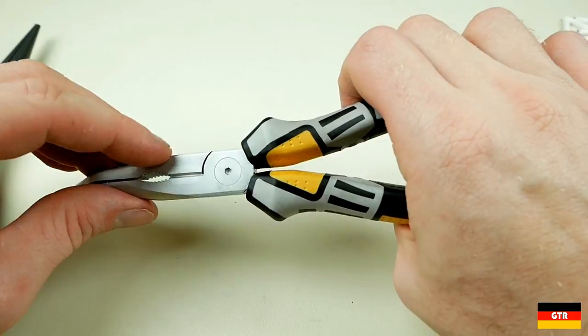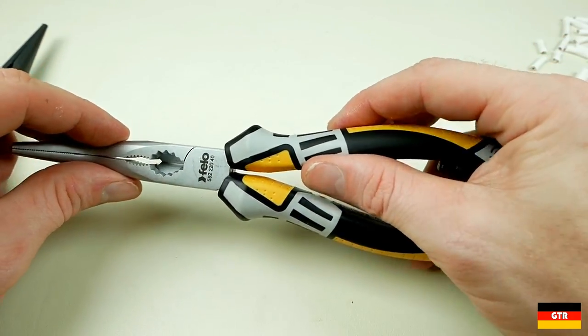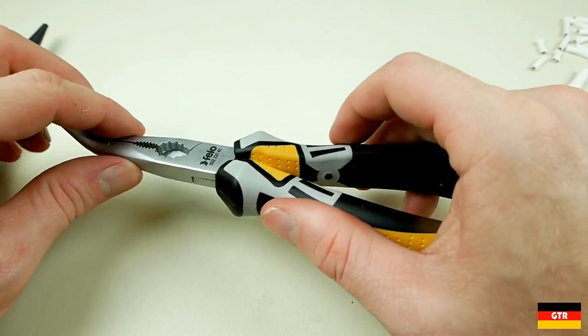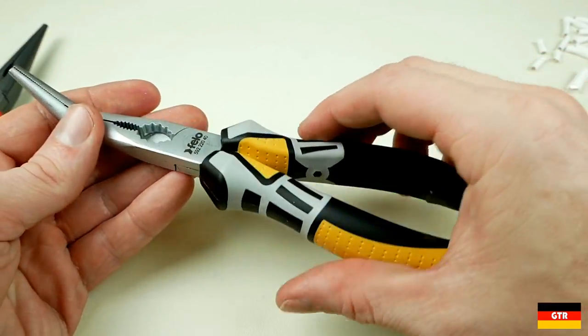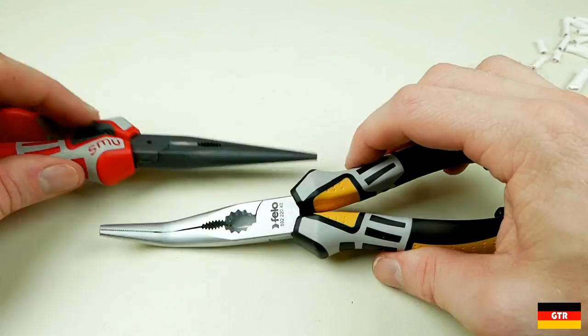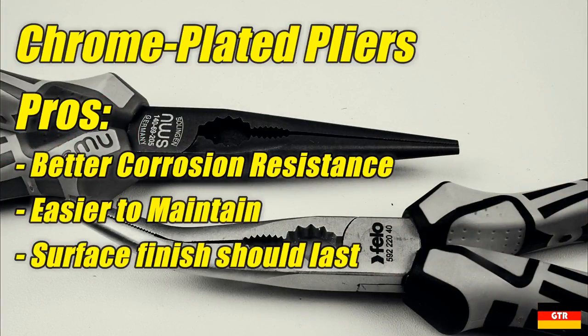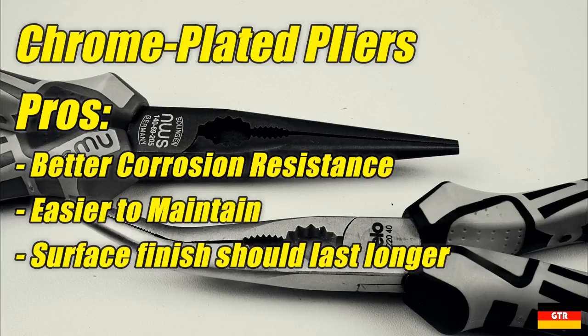Again, this is not exactly scientific because we were only using a single sample from each control set here. However, using some inference, we can make the following statements on the pros and cons of the chrome plated pliers. First off with the pros, we get better corrosion resistance since the chrome plating will last much longer than any black or polished finish will. They are theoretically easier to maintain because no corrosion inhibitor is required to prevent rusting and the surface finish should last longer which should prolong the life of the pliers as the chrome plating will wear before the cutting edges or jaw teeth start to wear.